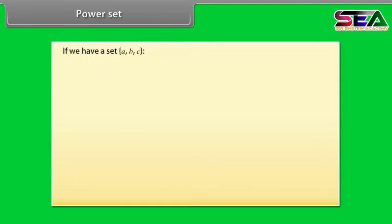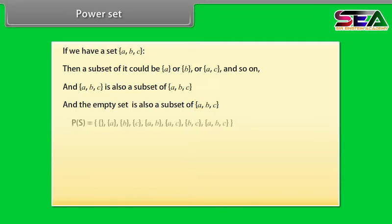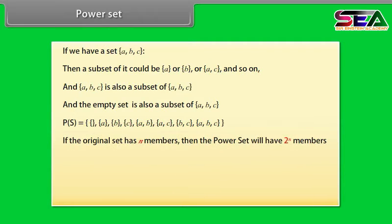Power set. If we have a set A, B, C, then a subset of it could be A or B or A, C and so on. And A, B, C is also a subset of A, B, C. And the empty set is also a subset of A, B, C. P(S) is equal to A, B, C, A, B, A, C, B, C, A, B, C. If the original set has N members, then the power set will have 2 raised to power N members.